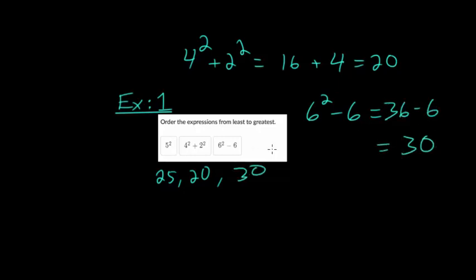So least to greatest, the 4 squared plus 2 squared would be first, then the 5 squared is in the middle, and the 6 squared minus 6 is the greatest.